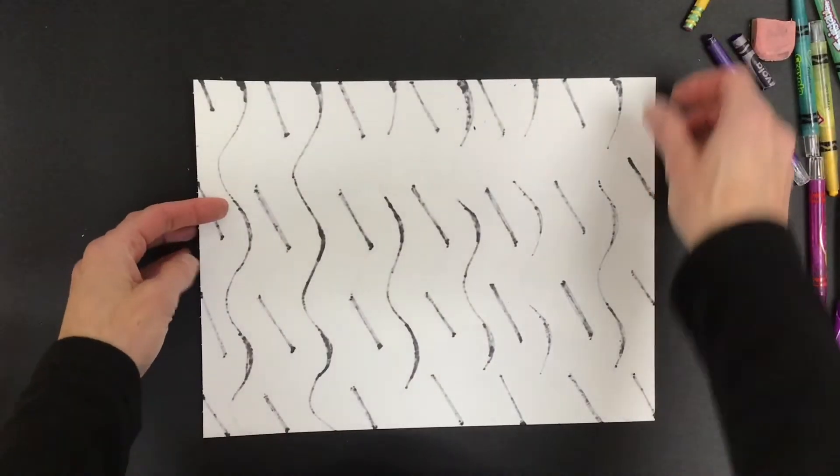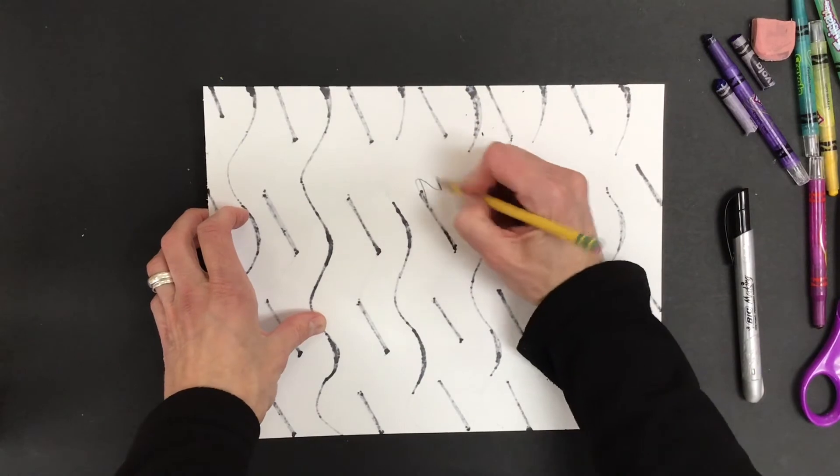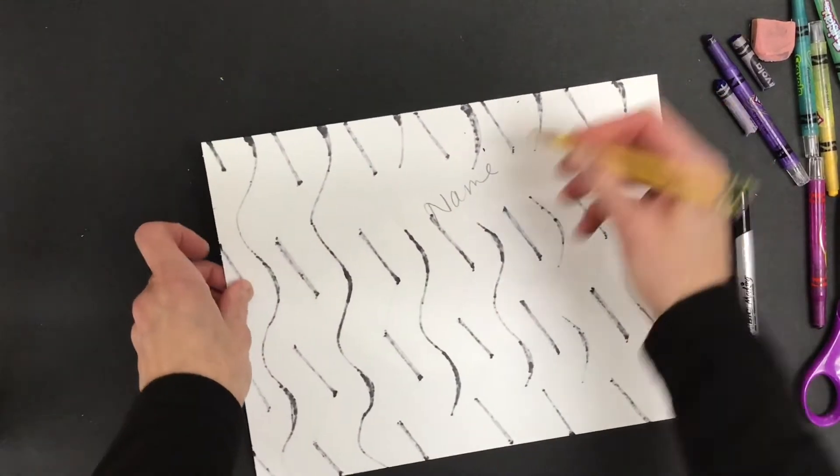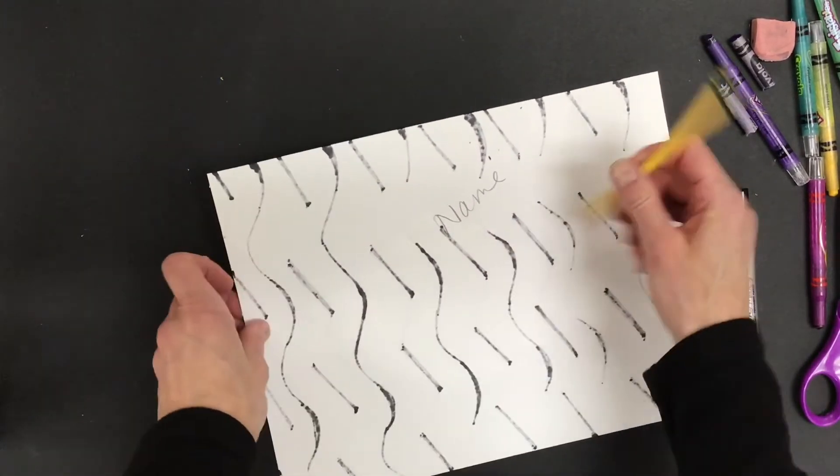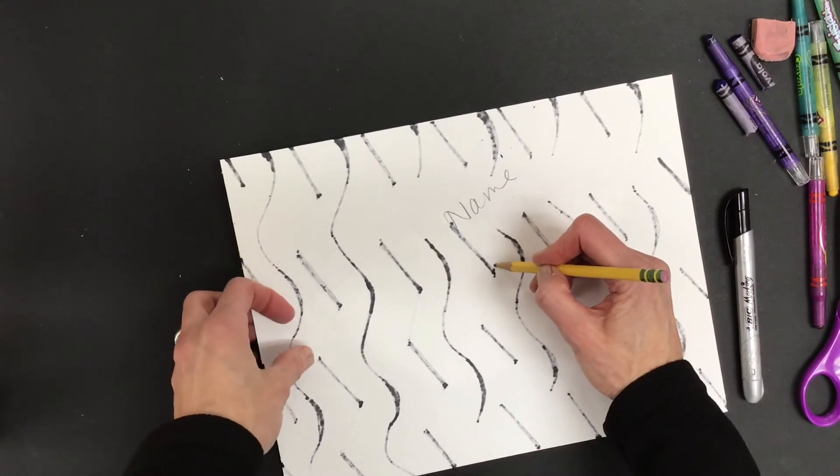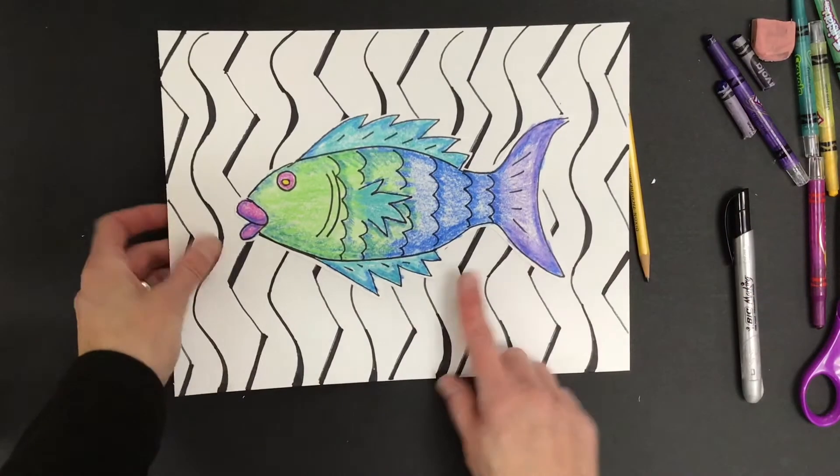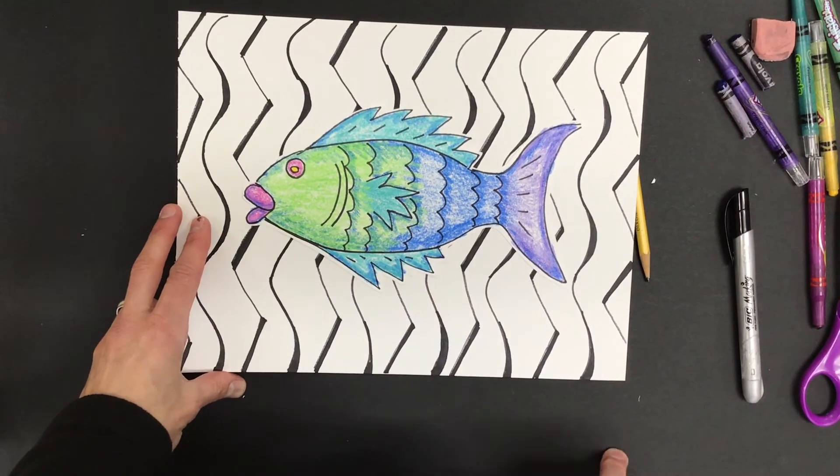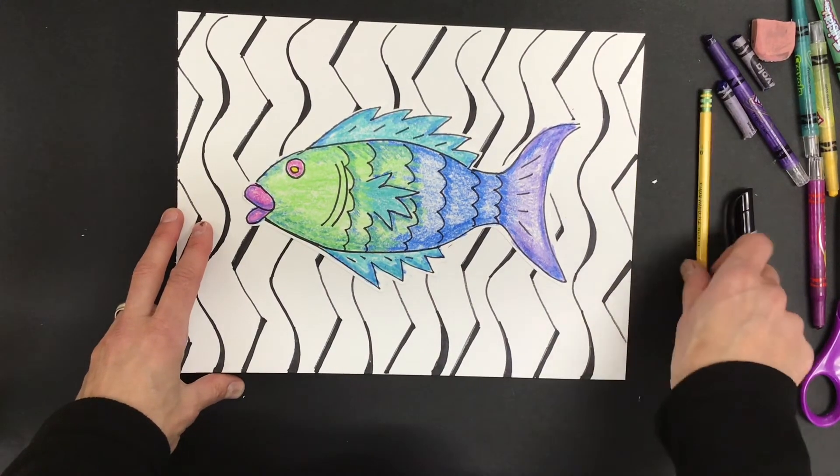This, with your name on the back and your teacher's name. So whoever your teacher is, your classroom teacher, put your teacher's name on there. This, if you're in the art room, will go on the drying rack.